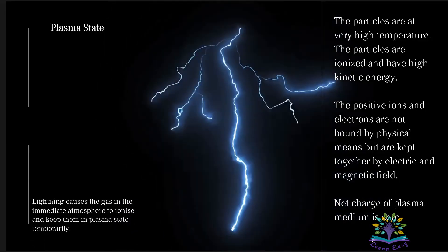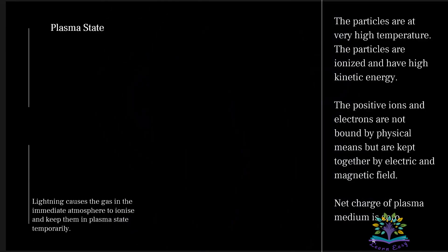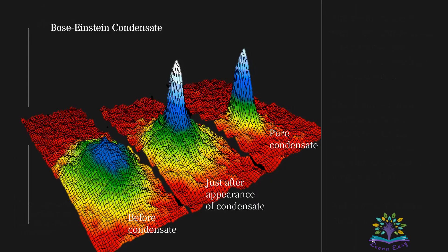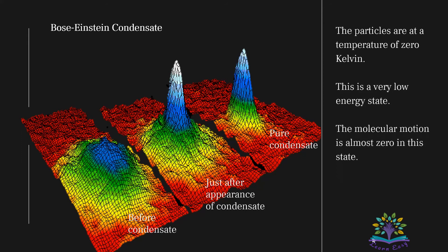Bose-Einstein condensate: The particles are at a temperature of zero Kelvin. This is a very low energy state. The molecular motion is almost zero in this state. The image shows velocity distribution data of a gas of rubidium atoms. When the gas reaches pure condensate state, the atoms stop moving.